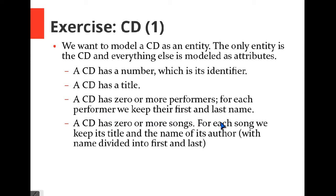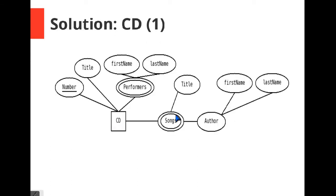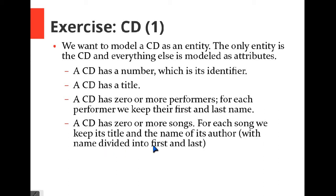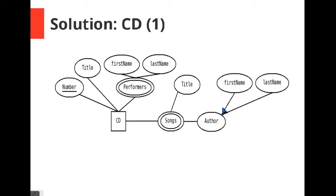For each song we keep its title and the name of its author. The CD has zero or more songs, so song is a multivalued attribute. For each song we keep its title and the author's name, so song is also a composite attribute. The author's name is further divided into first and last name. You can take time and go through this again to make sure you understand everything, and then I will give the last question.